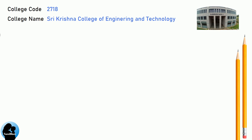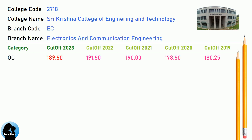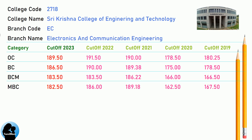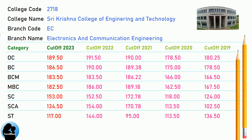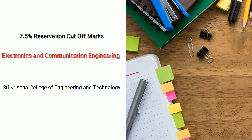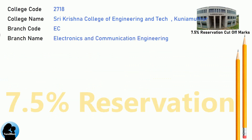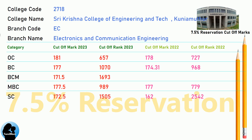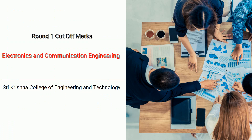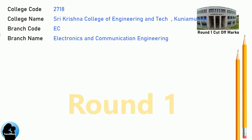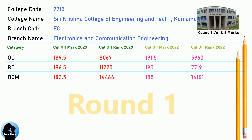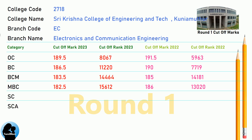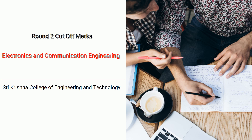DNEA Cut-Off for Shri Krishna College of Engineering and Technology in Electronics and Communication Engineering. DNEA 7.5 Reservation Cut-Off. DNEA Round 2 Cut-Off for Shri Krishna College of Engineering and Technology in Electronics and Communication Engineering.